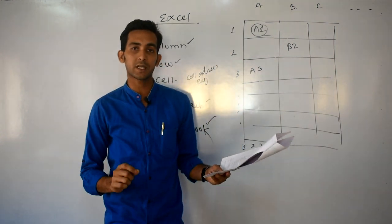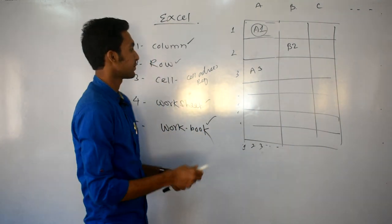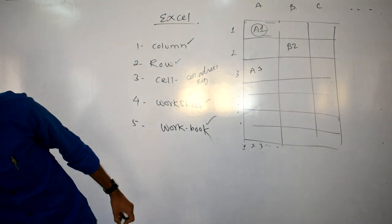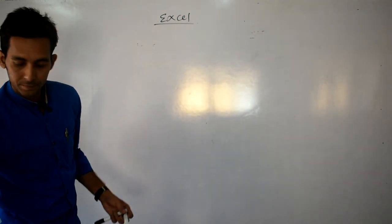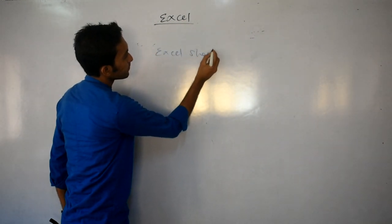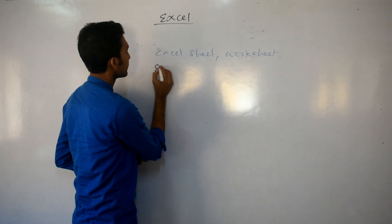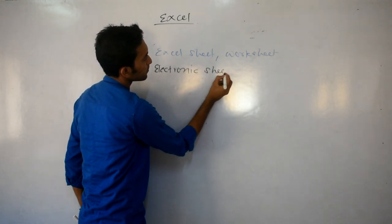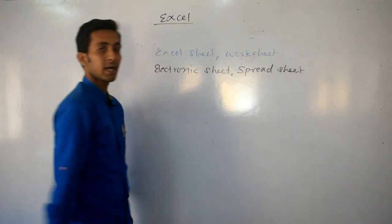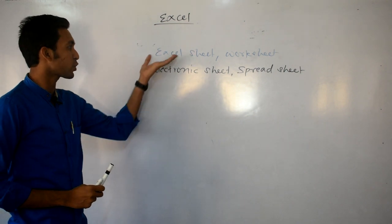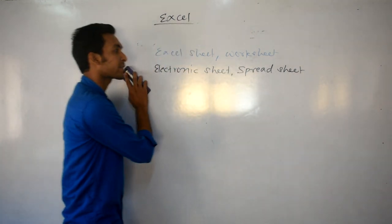Question number 1 is an 8-mark question. Consider the following worksheet — also known as an Excel sheet, electronic sheet, or spreadsheet. Don't be confused — they all refer to the same Excel sheet.